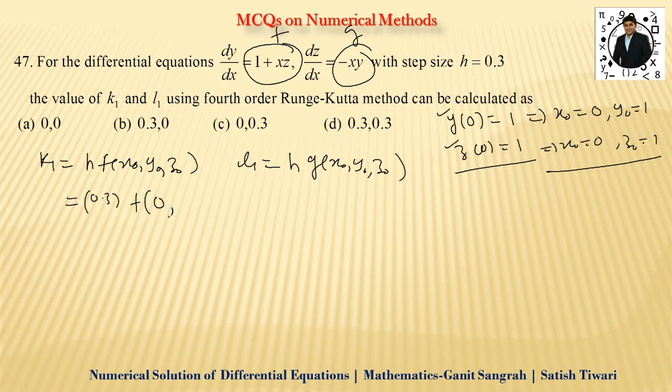Agar aapne x0 put kiya it is 0, y0 kitna put kiya? Aapne it is one put kiya. Or z0 kitna hai jaake it is what, one. Aur yahan pe usko hum calculate karte hai, it is 0.3. f humara one plus xz hai. Toh one plus xz matlab one plus it is what, zero into z. z is what, one. Toh aa jaake it is what, 0.3. Toh k1 ka value toh mera 0.3 aa raha hai.